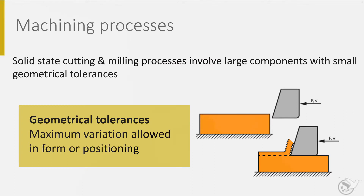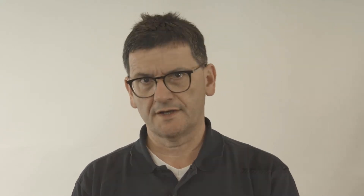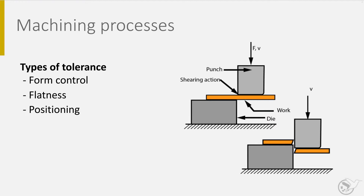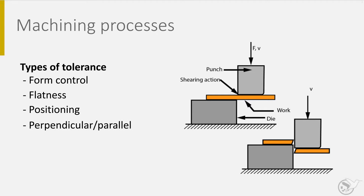Therefore, processes like milling and drilling apply cutting fluids, whose purpose is to reduce the temperature, to reduce the wear by lubrication, and to remove the chips. Chip removing processes can be very accurate and make very complex products. Regarding tolerances, there are several types: form or shape control, flatness of surfaces, positioning of details, and angles between intersecting or parallel surfaces.